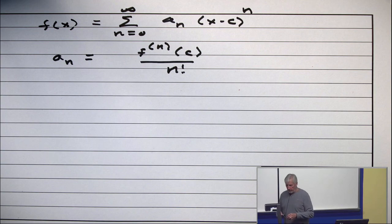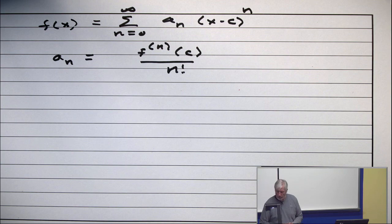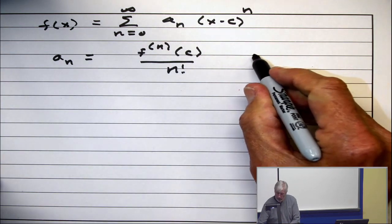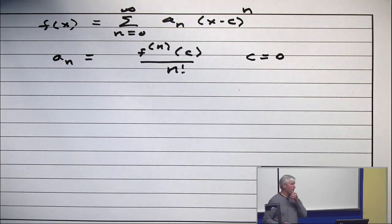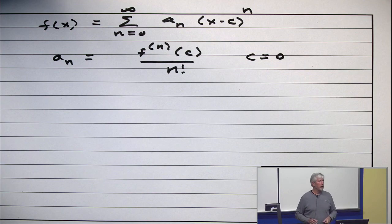Now we're going to be especially interested in the case where c is zero. So because we're talking about generating functions, it's always x to the nth power, not x minus c to the nth power.